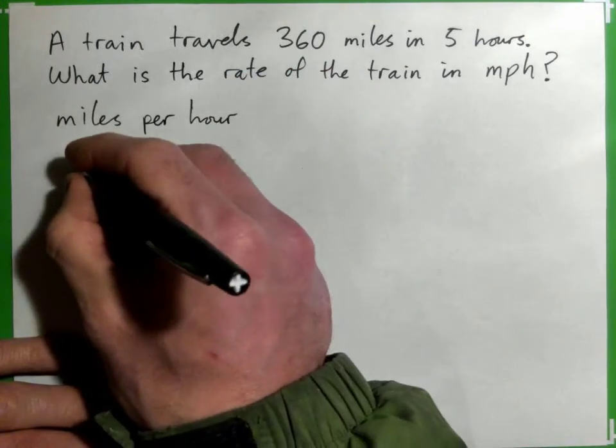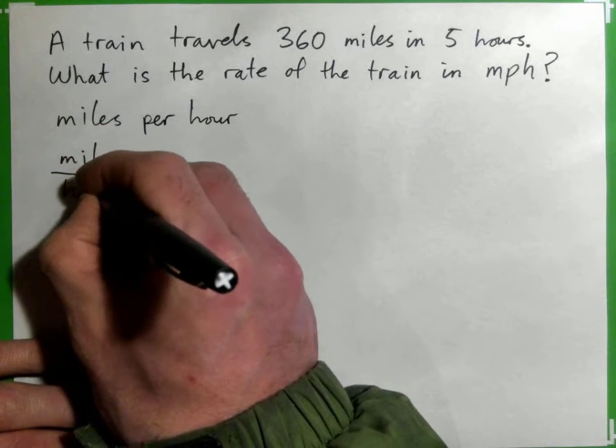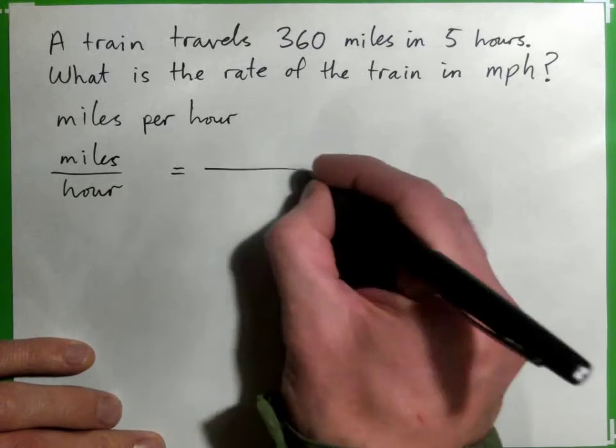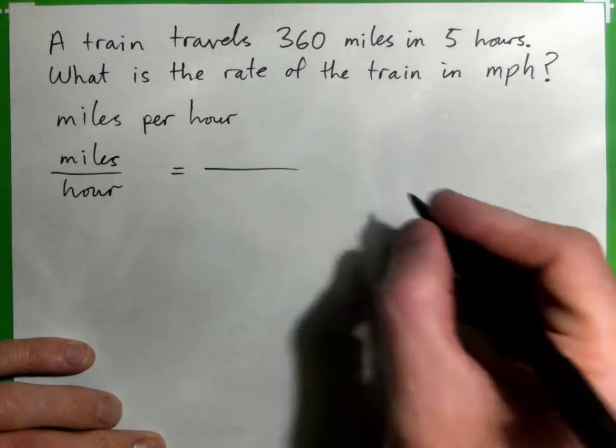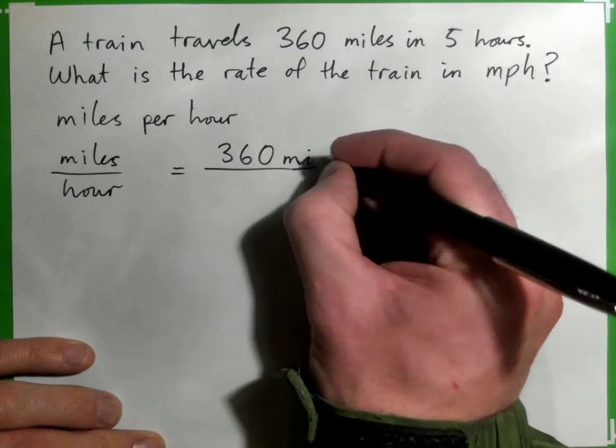So it's miles over hour. Right? Miles per hour. How many miles do we do? 360 miles. By the way, miles is like MI. That's the shorthand for miles.